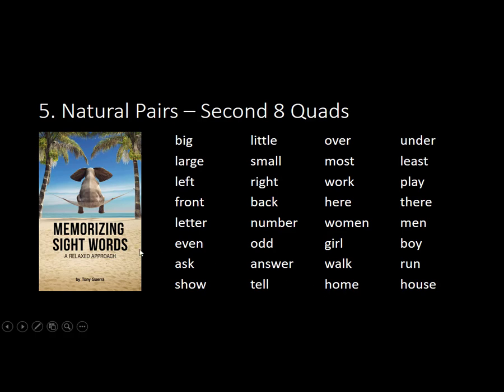This is the second group of natural pairs. I just split it up because 64 was overwhelming. You'll notice that within the four you're going to have relationships that make sense. I'll go over the details after I go over them, but I'll just read them now in their quads.